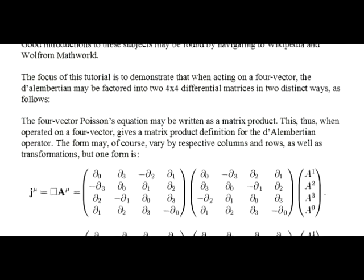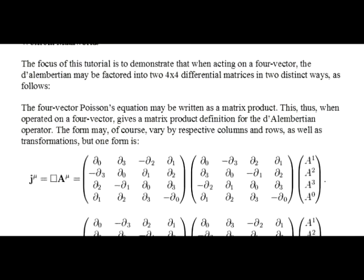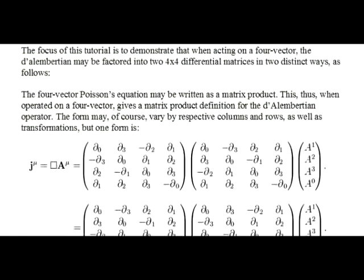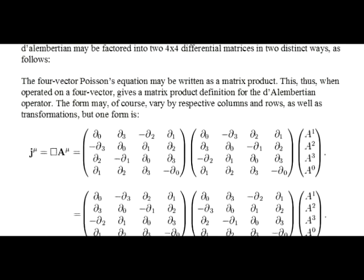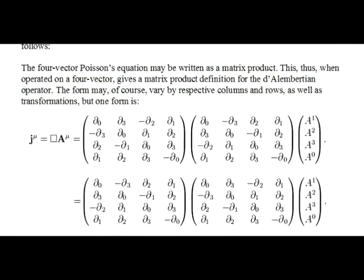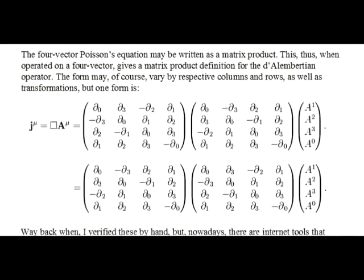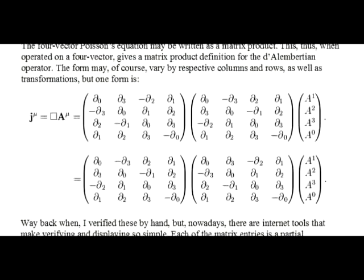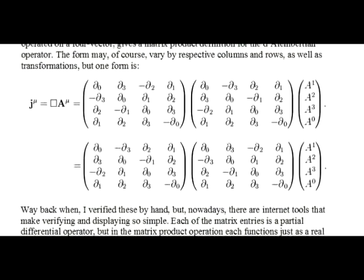The four-vector Poisson's equation may be written as a matrix product. When operated on a four-vector, this gives a matrix product definition for the D'Alembertian operator. The form may, of course, vary by respective columns and rows, as well as transformations, but can be written as either of the following matrix products.